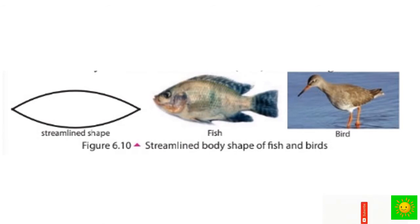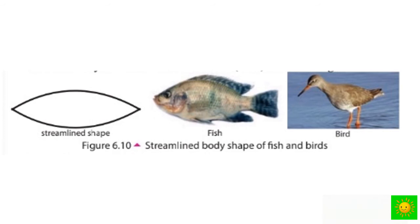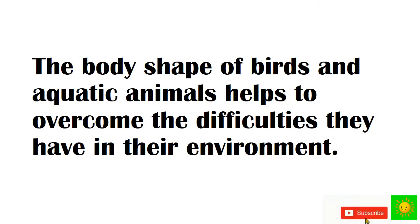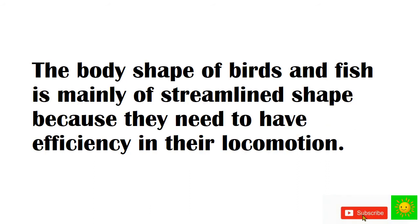This is a picture of the streamlined body shape of fish and birds. You will observe several kinds of birds and animals with a streamlined shape. The body shape of birds and aquatic animals helps to overcome difficulties in their environment. The body shape of birds and fish is mainly streamlined because they need efficiency in their locomotion.